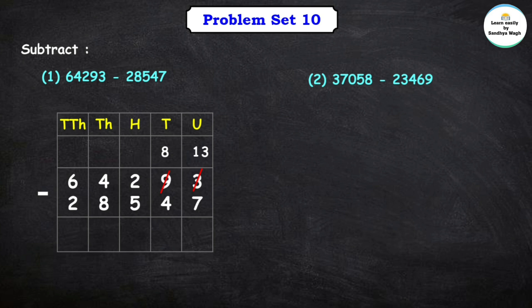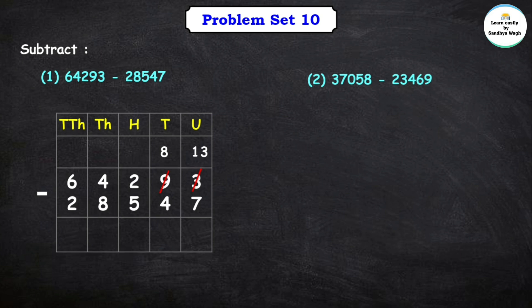Can we subtract 7 from 13? Yes, we can. After subtracting 7 from 13 we get 6. Now, 8 minus 4 is equal to 4.